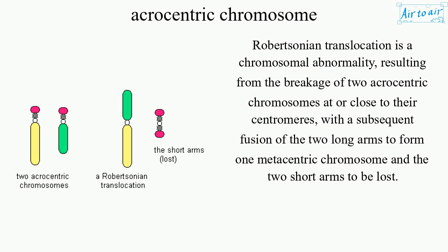Robertsonian translocation is a chromosomal abnormality resulting from the breakage of two acrocentric chromosomes at or close to their centromeres, with a subsequent fusion of the two long arms to form one metacentric chromosome and the two short arms to be lost.